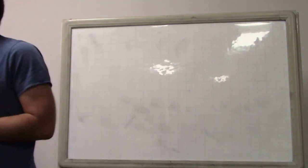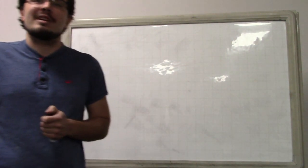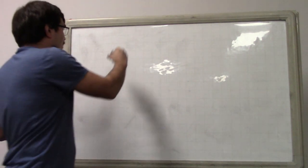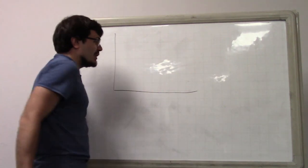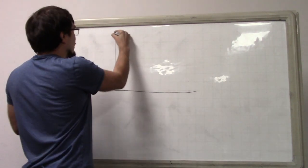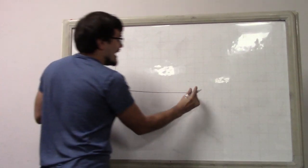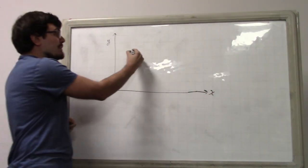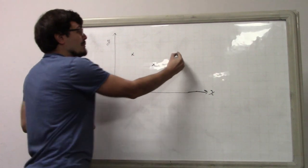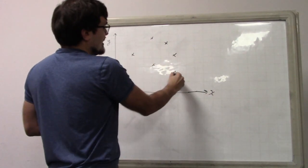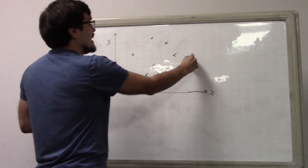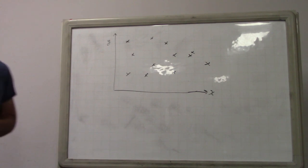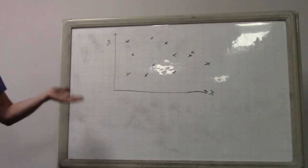The motivating problem is like this: we have coordinates — x and y — representing a map. On the map we have temperature sensors sensing temperatures at various places. These are not necessarily uniformly distributed; they're just all over the place wherever somebody had a chance to stick a temperature sensor.